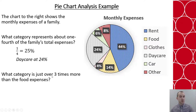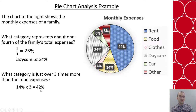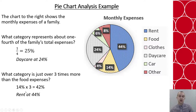A reading-between-the-data question: what category is just over three times more than the food expenses? We first find food — the one with bricks — at 14%. Three times 14% is about 42%, and just over three times means just over 42%. The only one close is 44%. Using our key, we see that is rent. So rent is about three times more than the amount they're spending on food.